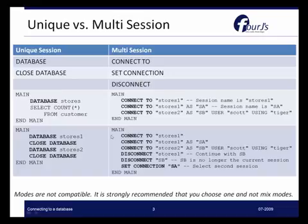Now this second example here shows those three connections, and then we're also using a DISCONNECT to disconnect from the current session. Then we're disconnecting from the session called SV, and we're setting a connection to SA.